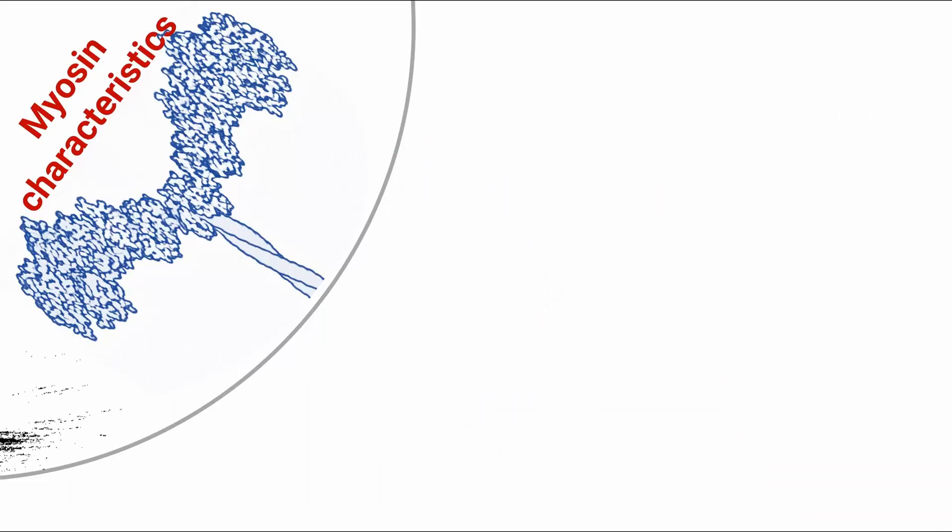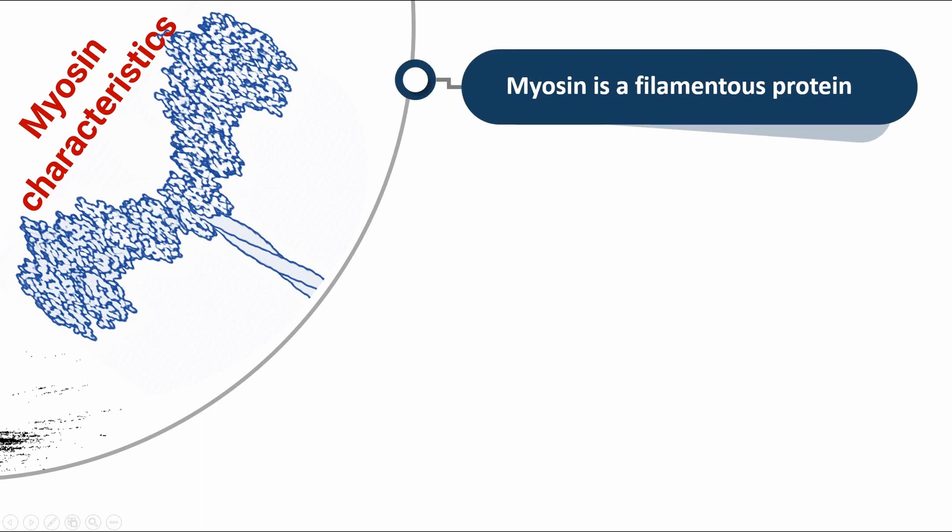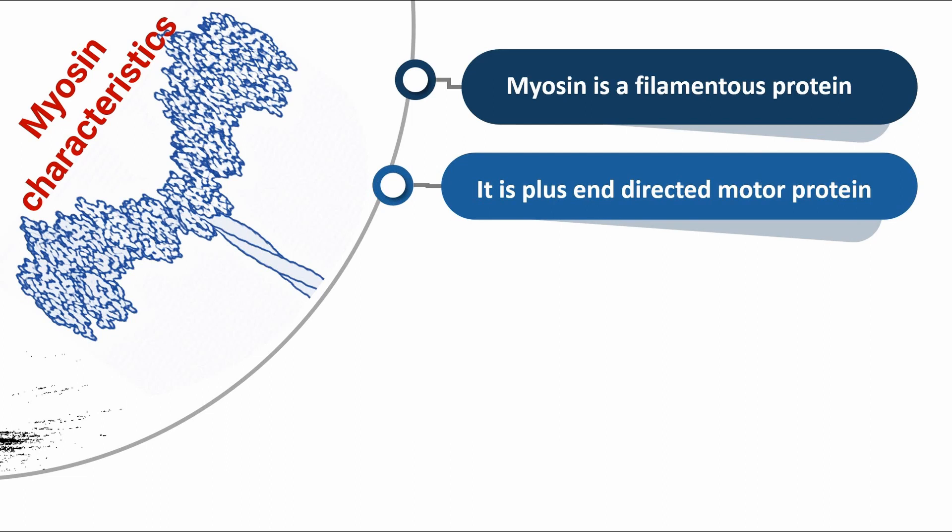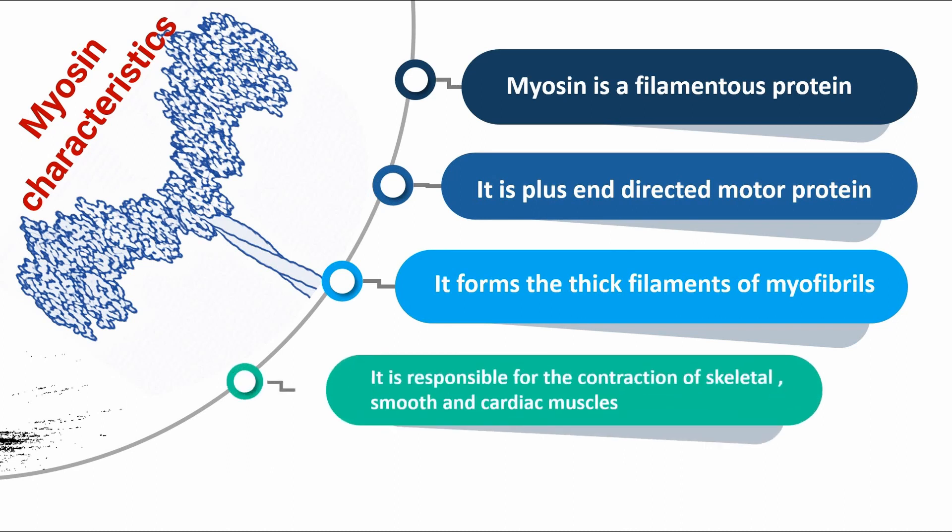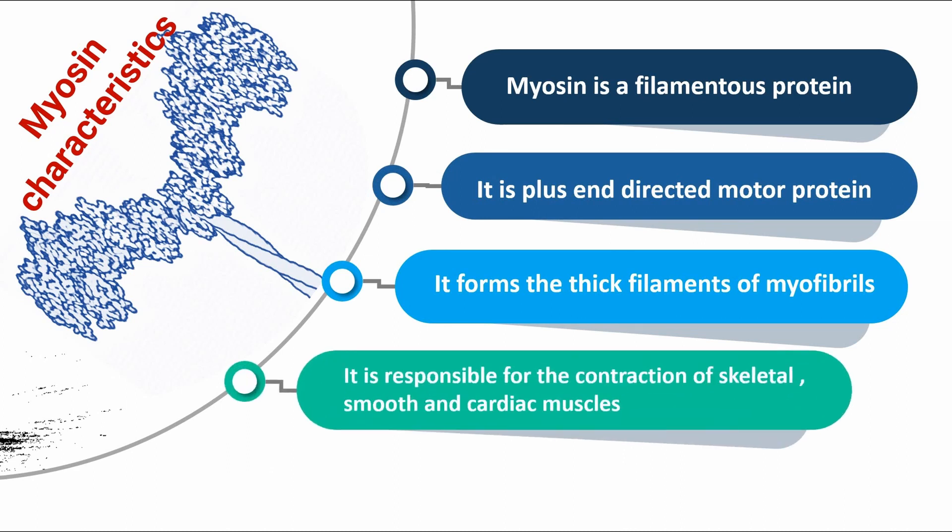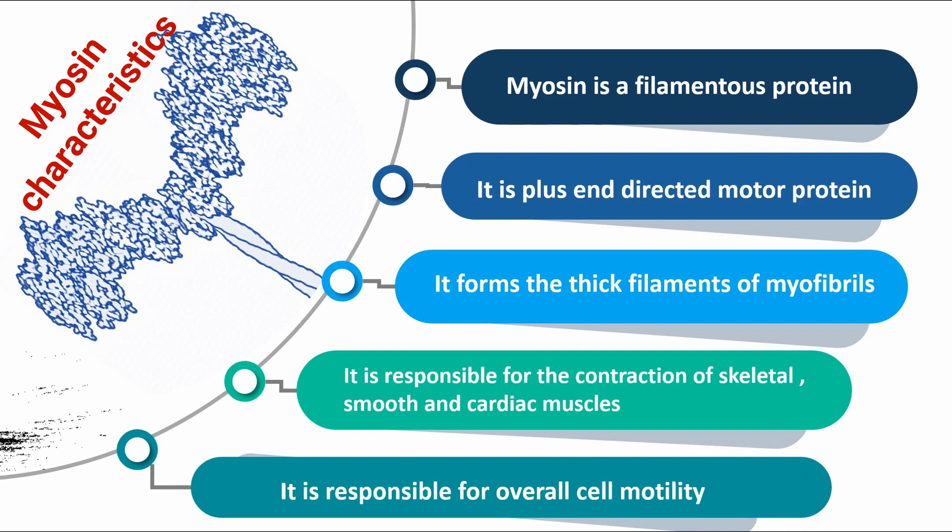Myosin characteristics: Myosin is a filamentous protein. It's a plus-end directed motor protein. It forms the thick filaments of myofibrils. It's responsible for the contraction of skeletal, smooth, and cardiac muscles, and it's responsible for overall cell motility.